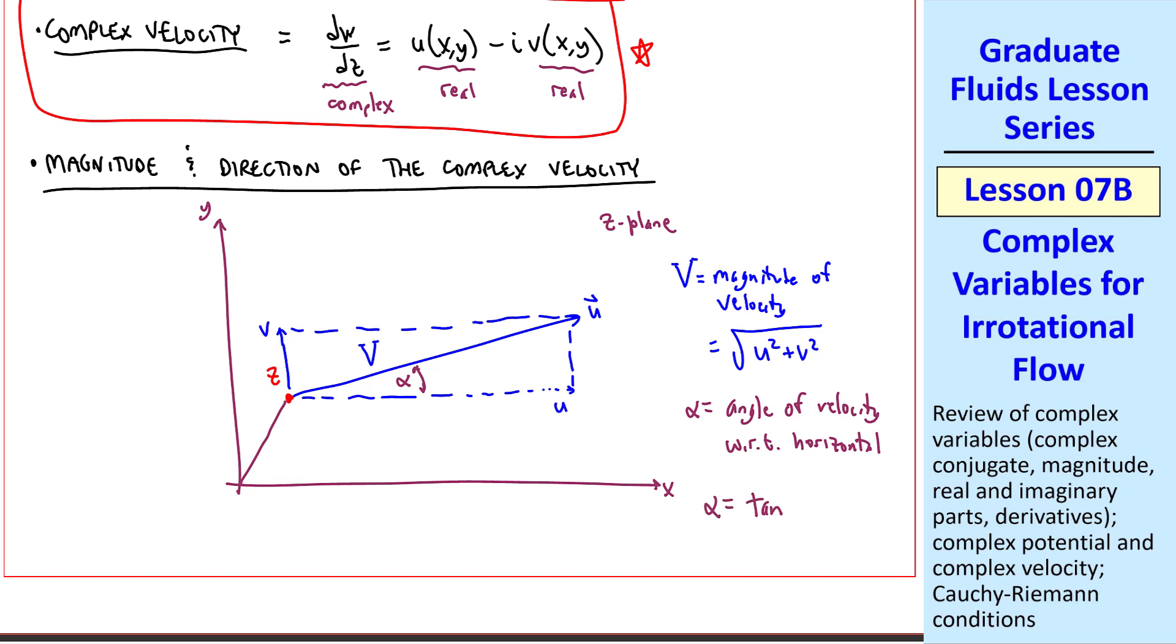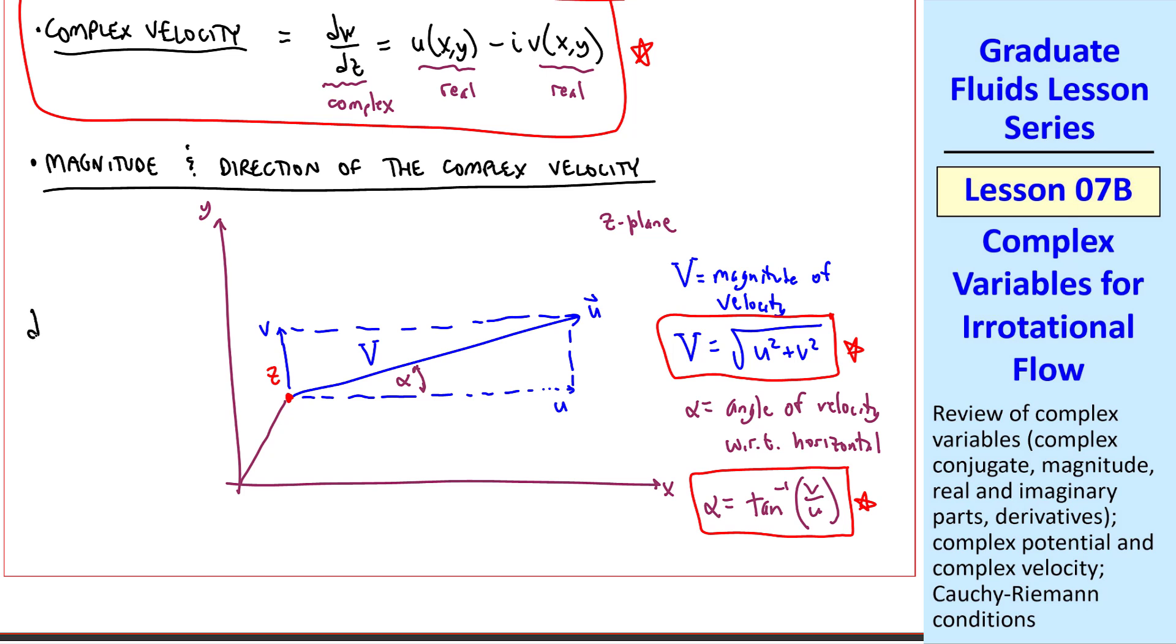Our complex velocity, dw dz, is u minus iv, or in terms of capital V and alpha, we can also express the complex velocity as its magnitude times e to the minus i alpha. These two are equivalent, and we'll use whichever one is most convenient in our analysis.